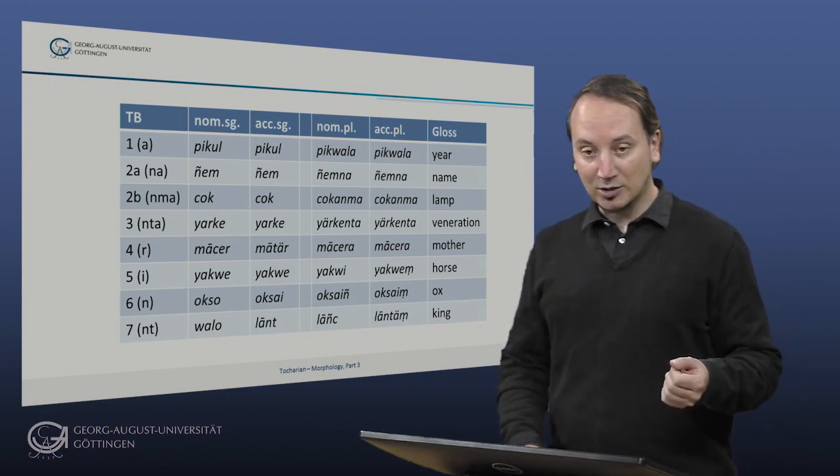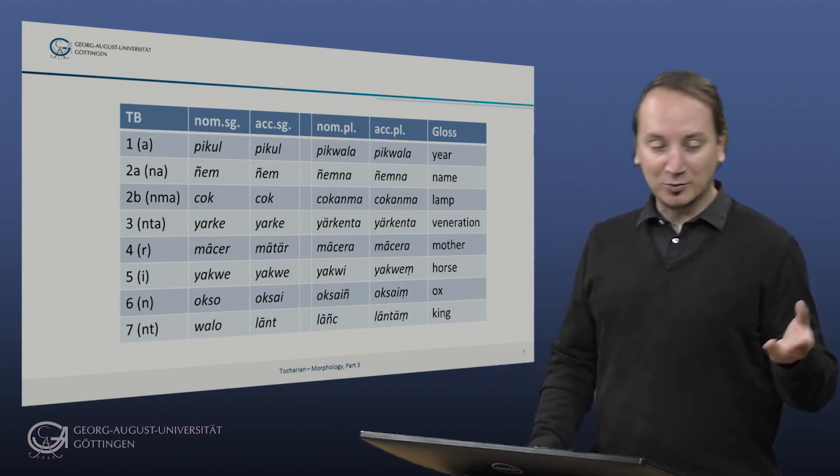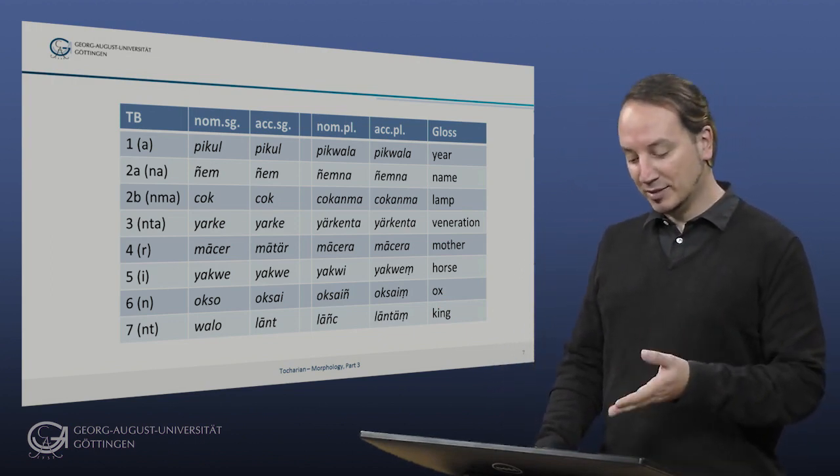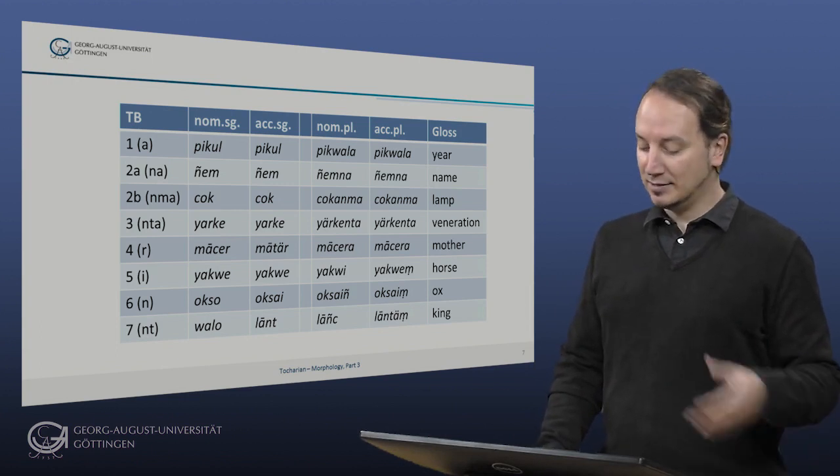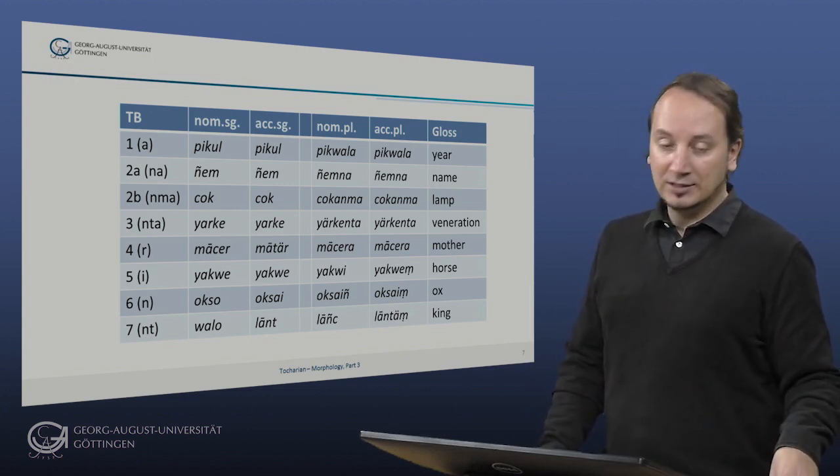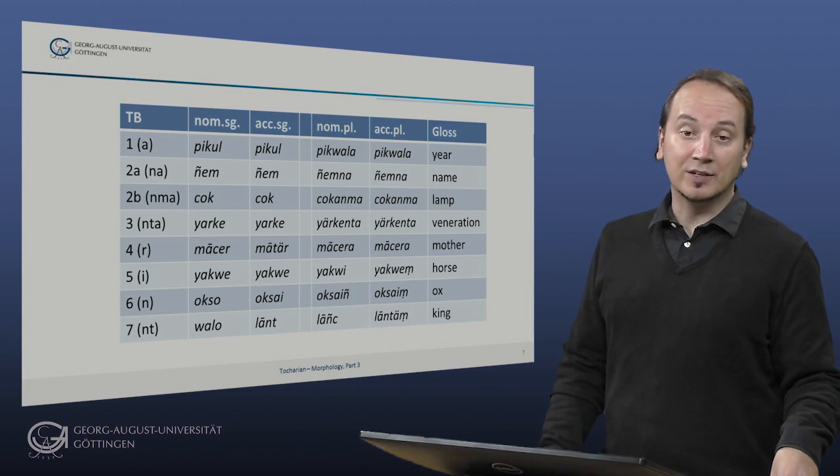And finally, our friend the king that we already had: walo, oblique singular lāṃ, and we have the plural lāñc and in the accusative lāṃtun.